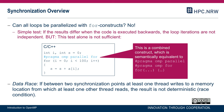An important remark: pragma omp parallel for is different from pragma omp for shown on the previous slide. You need both constructs to parallelize a loop. You can write them on the same line as a combined construct, or on separate lines. The parallel directive creates the team of threads, and the for directive partitions the loop iterations and executes them chunk-wise by the threads in the team.